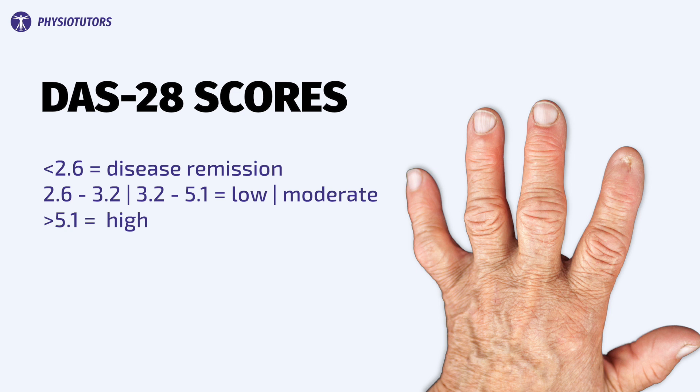Scores below 2.6 indicate disease remission. Scores between 2.6 and 3.2 and between 3.2 and 5.1 indicate low and moderate disease activity respectively. Scores exceeding 5.1 indicate high disease activity. When the disease is highly active, this can manifest as pain, stiffness, loss of muscle function, limited endurance, and/or lack of motor control, resulting in a danger of falling.